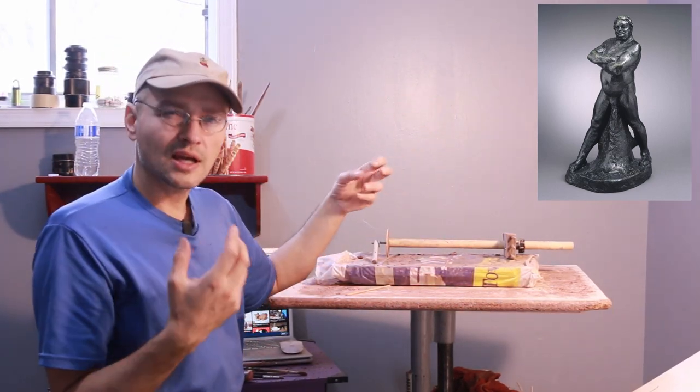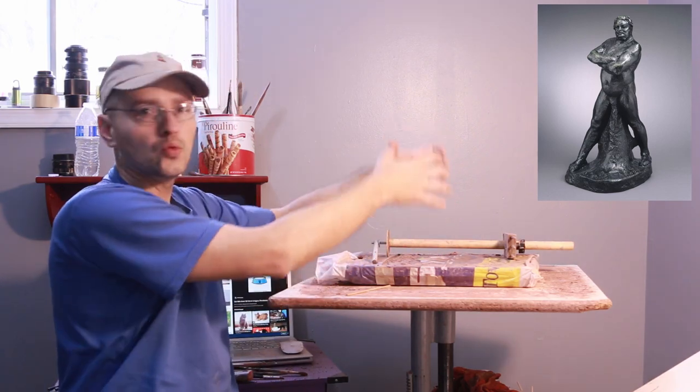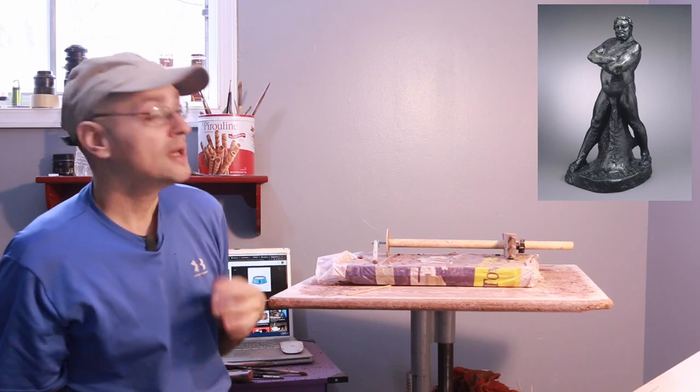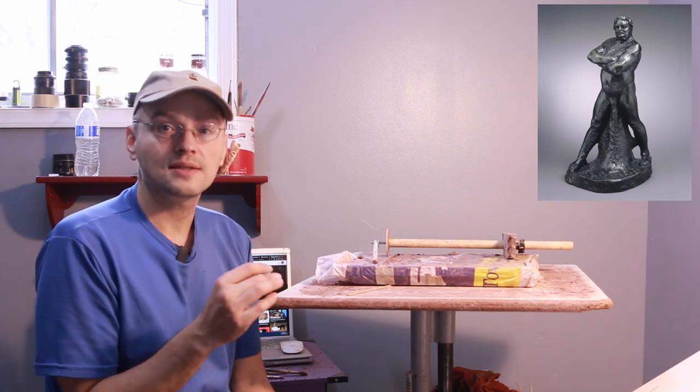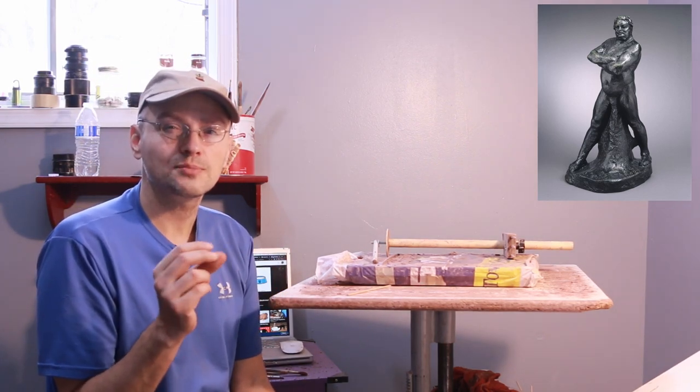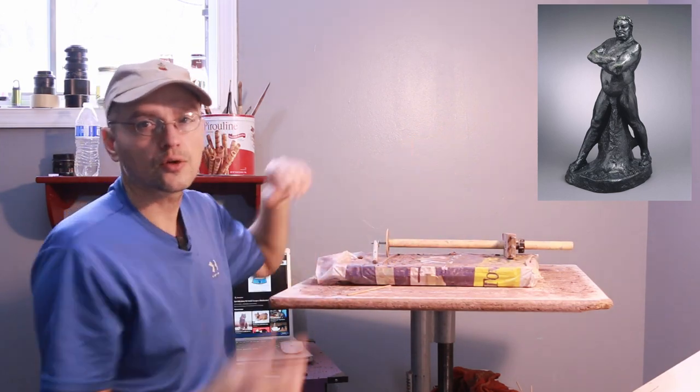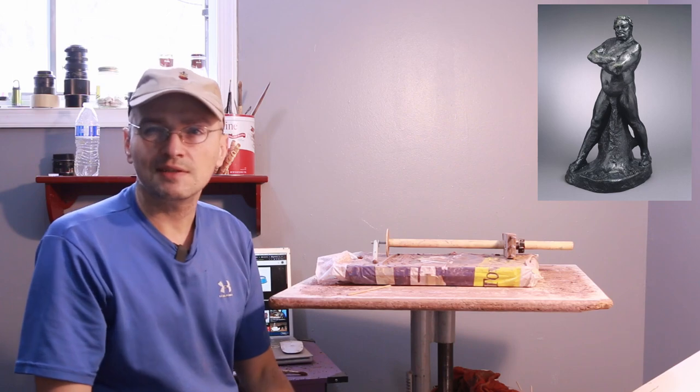But the way a lot of artists, including Rodin, did is they build a cone. A cone will support a lot of clay and it's very strong. You can do that for standing figures because you can put that cone directly through their legs.